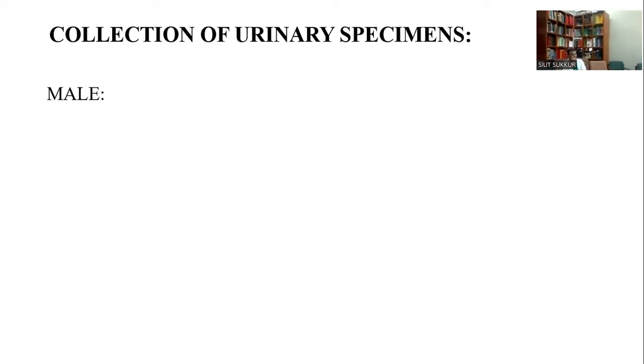Is there another way of collecting a sample in male patients? The four-container technique: collect the initial sample in container one, then midstream in container two, then perform prostatic massage and prostatic secretion goes into sample three, and post-prostatic massage urine goes into sample four. Sample one indicates urethral infection, and samples three and four indicate prostatic pathology.